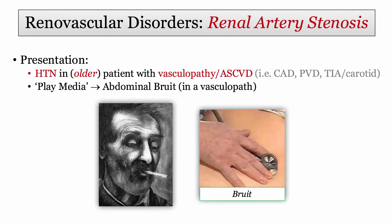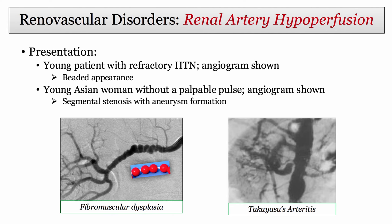What are the demographics for renal artery stenosis? The older patient with established vasculopathy — they will likely describe a patient with other manifestations of atherosclerosis, such as carotid or peripheral vascular disease. When they have you play media in a hypertension question and you see auscultation over the renal arteries, that is a renal artery stenosis question regardless of whether or not you hear the bruit.